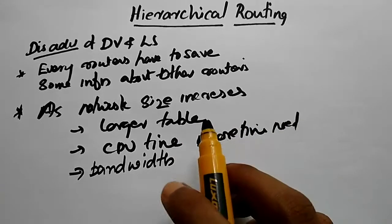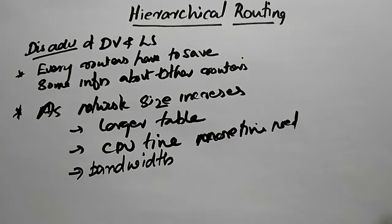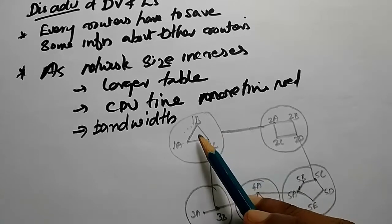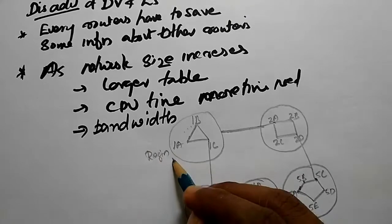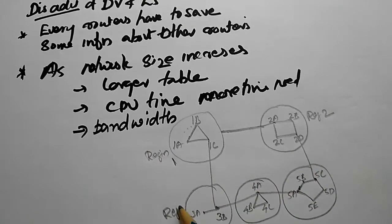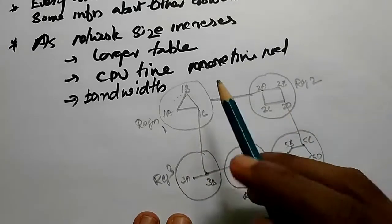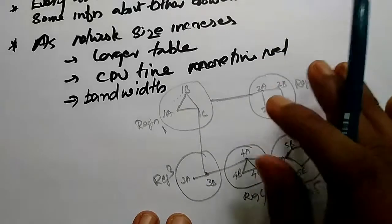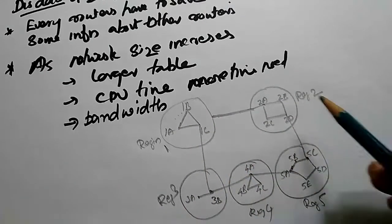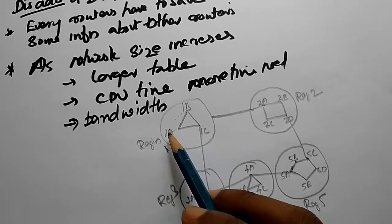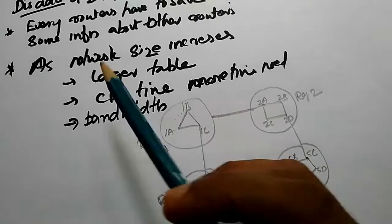Here is the solution. We can divide the network into regions — region 2, region 3, region 4, and region 5. We have 5 regions. For distance vector or link state routing, nodes are found across the network, but with hierarchical routing we organize them into regions.